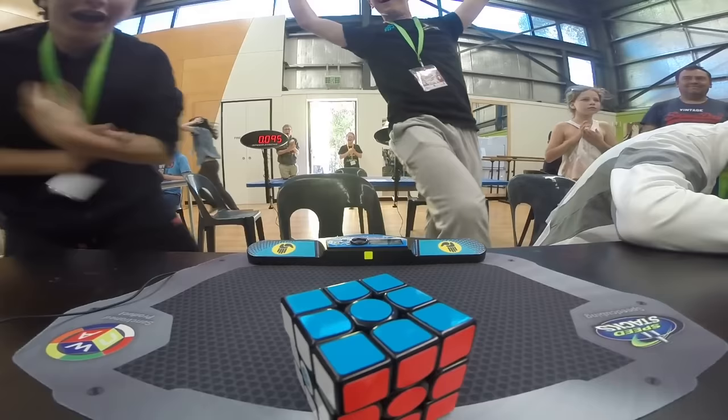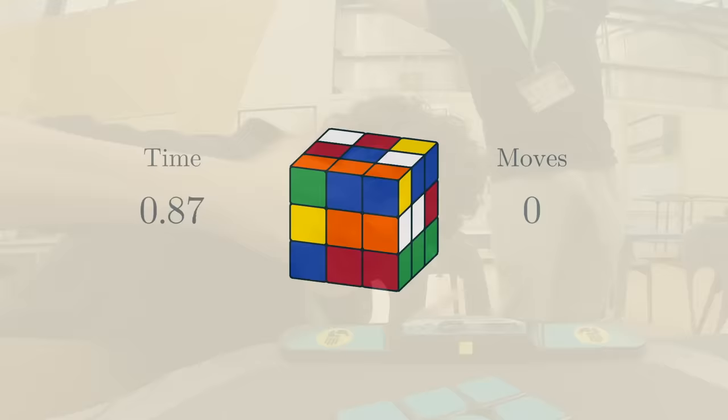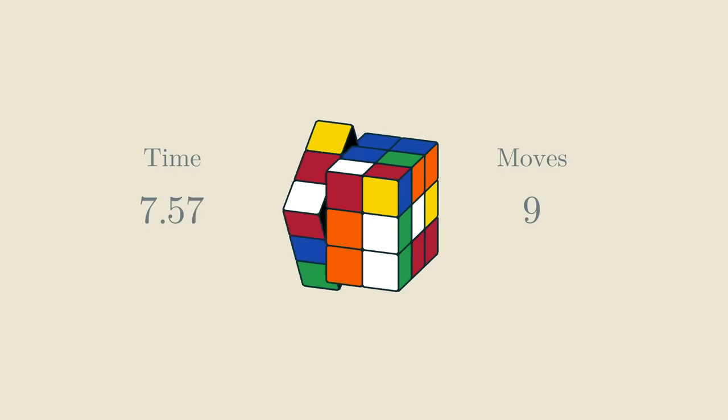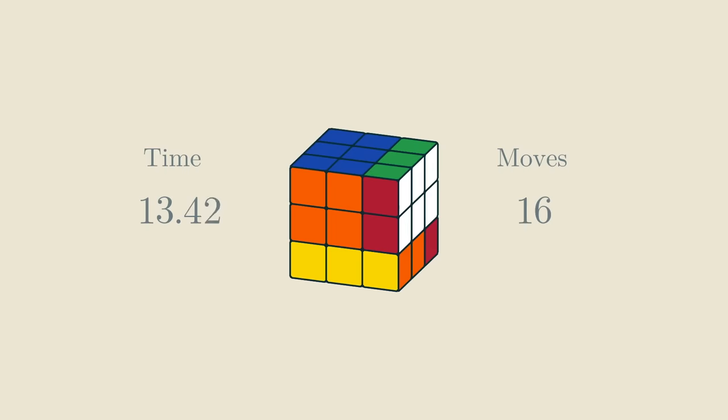I can't compete with that, but maybe my computer could if we redefine fast a little bit. Instead of time, let's measure the number of moves it takes to solve the cube. And let's find an algorithm that will help us solve any cube the fastest, thereby, in a way, beating Felix Zemdex.